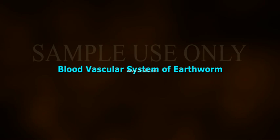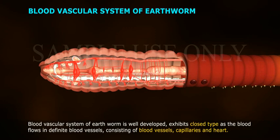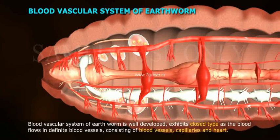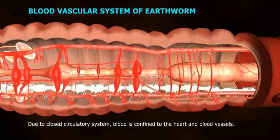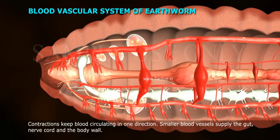The blood vascular system of the earthworm is well developed and exhibits a closed type, as the blood flows in definite blood vessels consisting of blood vessels, capillaries, and heart. Due to the closed circulatory system, blood is confined to the heart and blood vessels. Contraction keeps blood circulating in one direction.